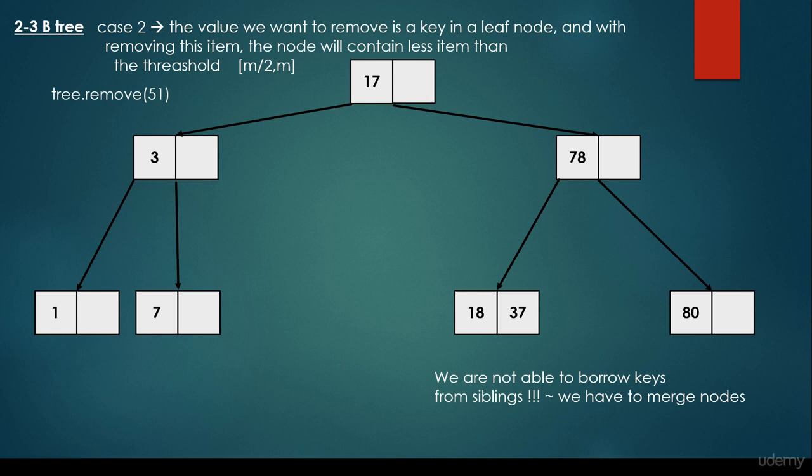Sometimes removal is easy because the target is just a leaf node we can remove directly. But sometimes the B3 properties would be violated, so we borrow items from the left or right sibling. Or sometimes we have to merge nodes — and this is symmetric, meaning we can merge with the left sibling or the right sibling. That's all about the remove operation. Thanks for watching.